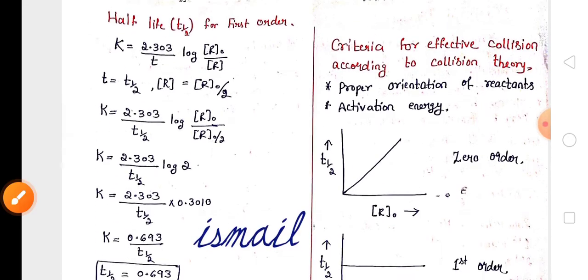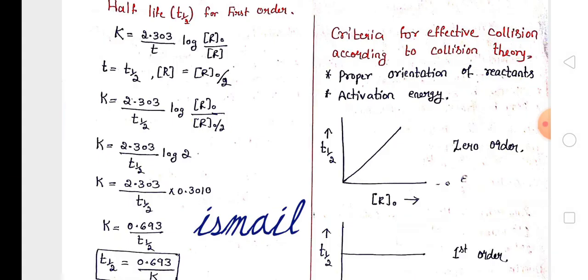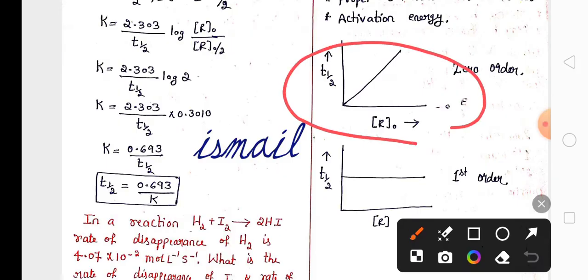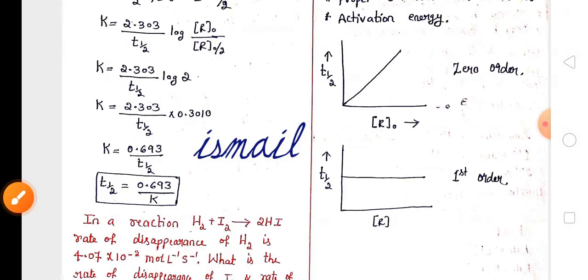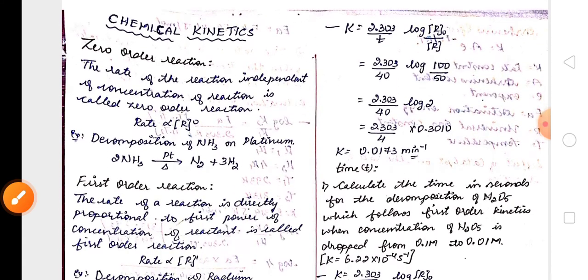For two marks, remember the criteria for effective collision of reactant molecules according to collision theory: first, proper orientation of reactants; second, sufficient activation energy. The two graphs related to R₀ and t½ for both zero order and first order reactions are also important.